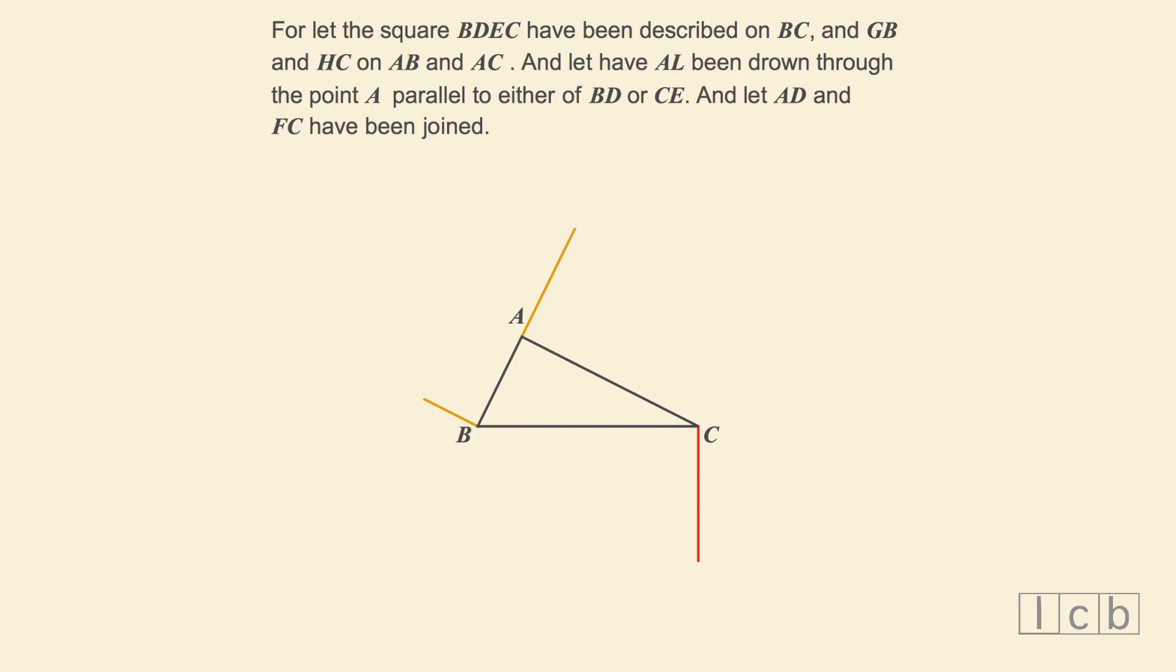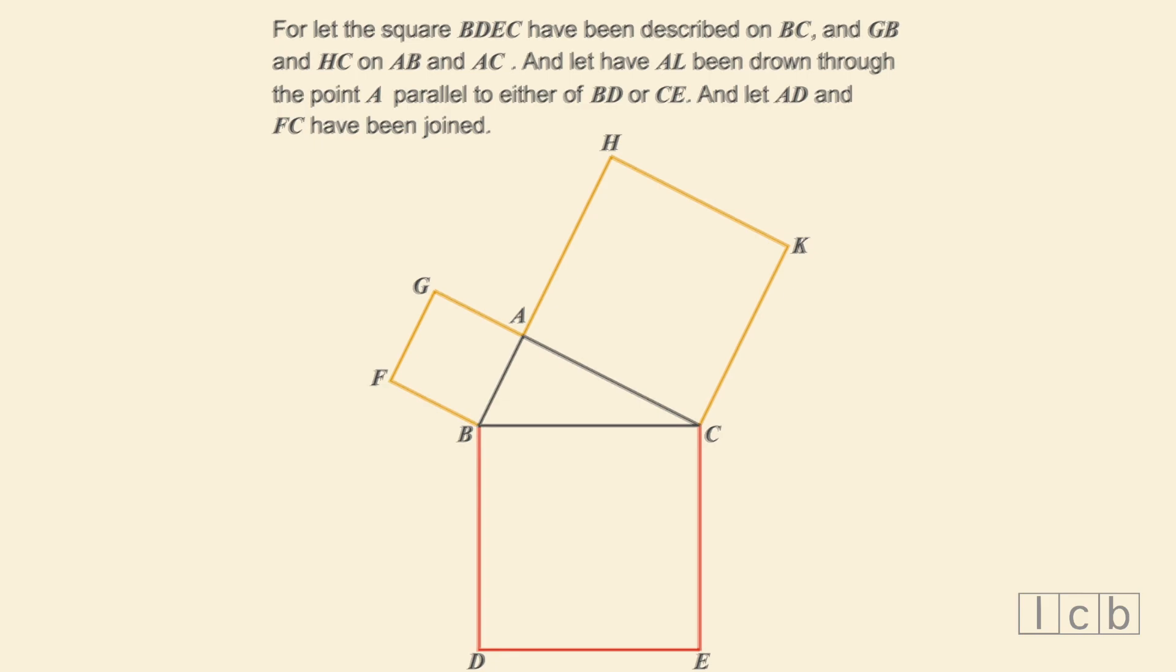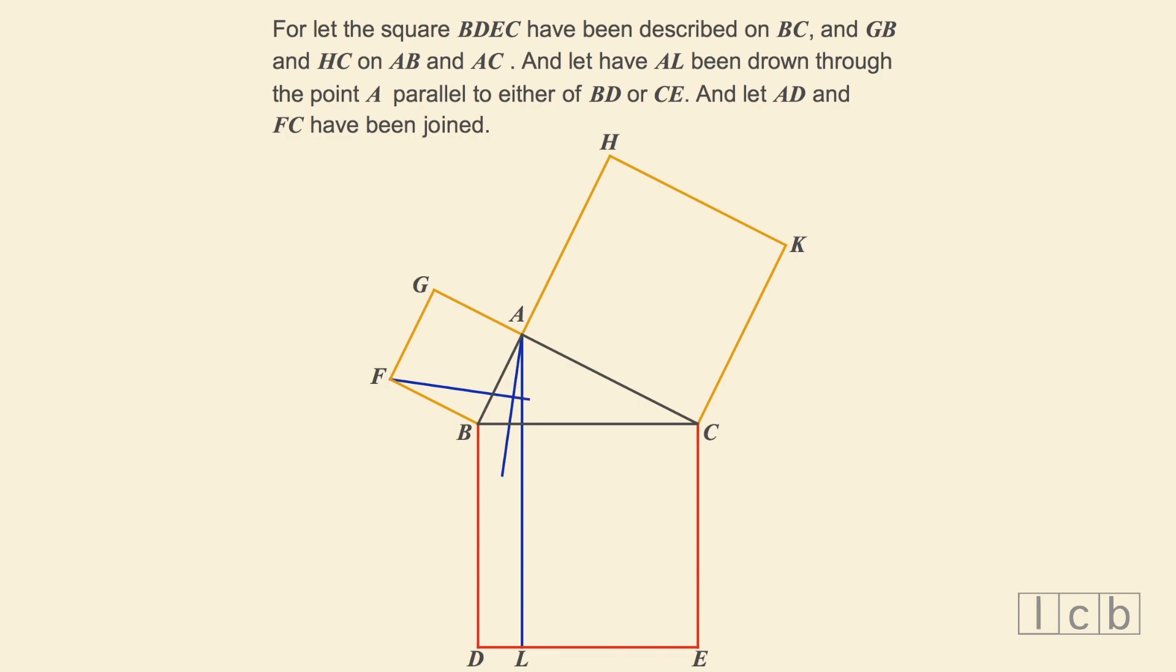For let the square BDEC have been described on BC, and GB and HC on AB and AC. And let AL been drawn through the point A parallel to either BD or CE, and let AD and FC have been joined.